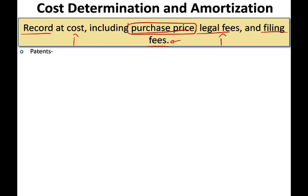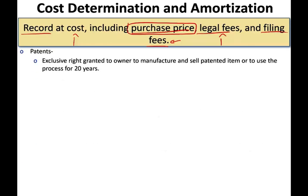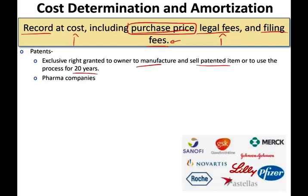Let's start with patents. A patent is an exclusive right granted to the owner to manufacture or sell a patented item, or use the process, for 20 years. Think of pharmaceutical companies like Sanofi, GlaxoSmithKline, Merck, Johnson & Johnson, and Pfizer. For example, Sanofi and Roche are looking to manufacture a vaccine for the coronavirus. They need to do a lot of research and development to find that vaccine, and once they do, the government will give them a patent — an exclusive right to produce it for 20 years.